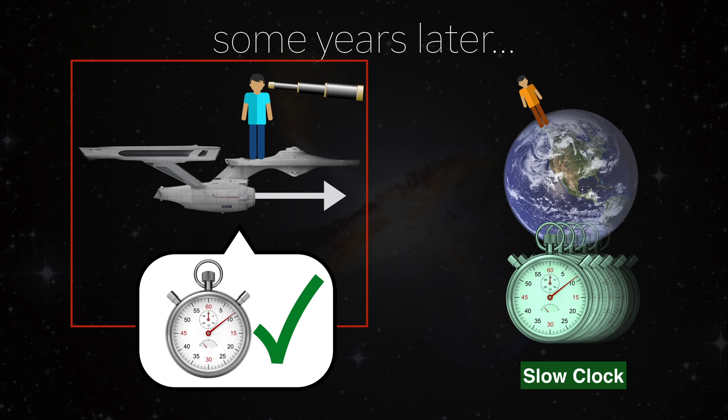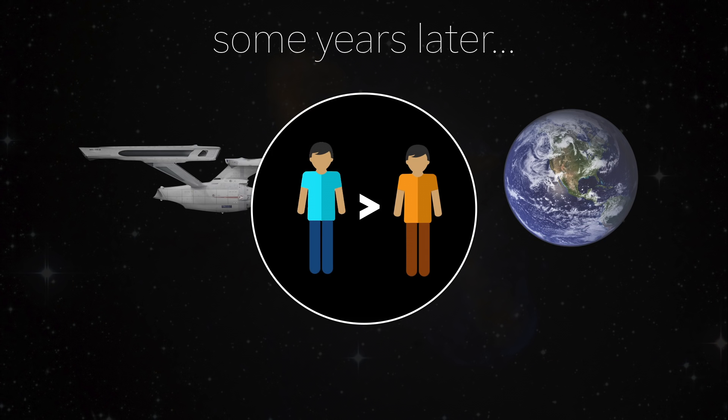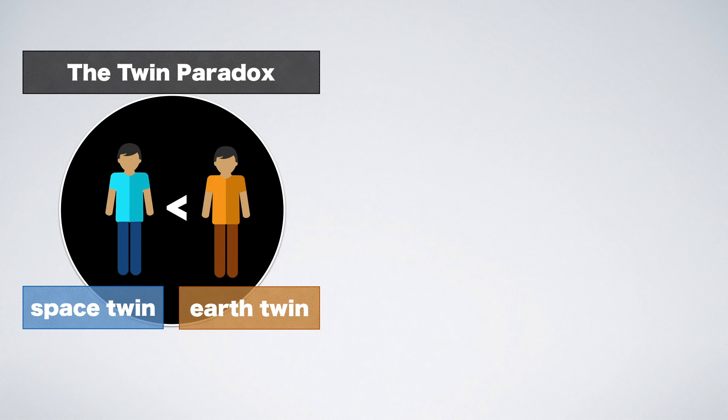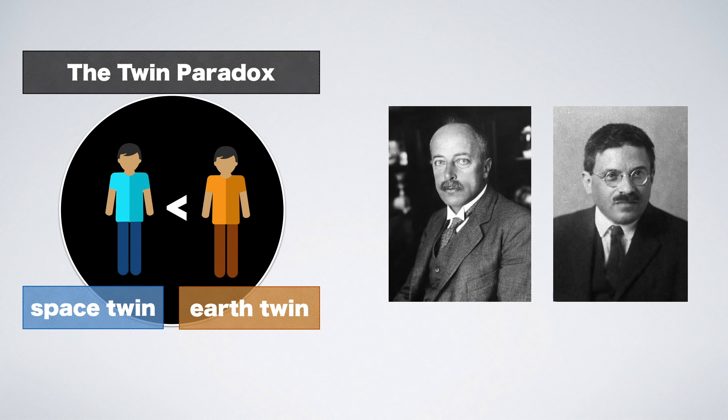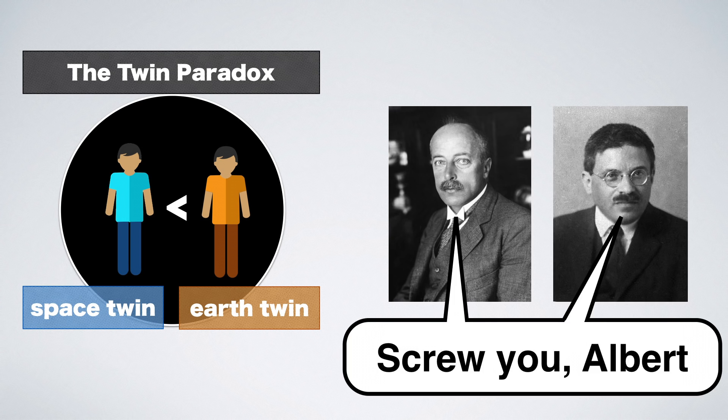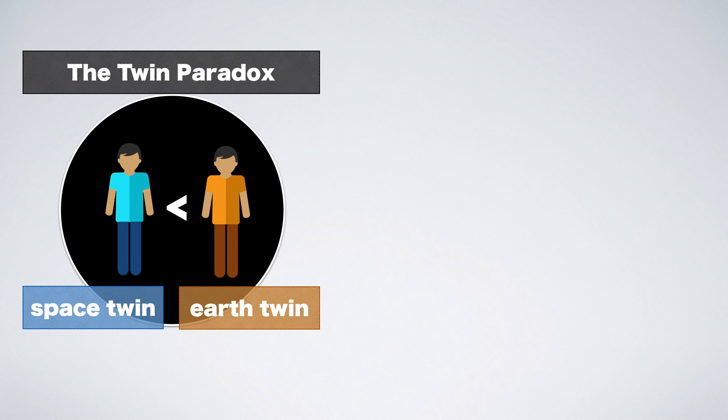So, upon Space Twin's return, shouldn't Earth Twin have aged less and be younger? What's going on here? This apparent paradox was used by Einstein's professional critics to argue against his theory. Today, the paradox has multiple accepted resolutions and should be called the Twin Problem, but well.